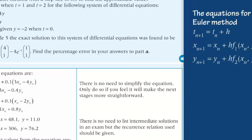After 10 steps, the method will produce the values for t equals 1, and after 20, the values for t equals 2.